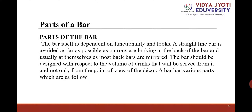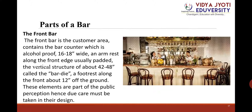Parts of a bar: The bar itself is dependent on functionality and looks. A straight line bar is avoided as far as possible, as patrons are looking at the back of the bar, usually mirrored. The bar should be designed with respect to the volume of drinks to be served. The front bar is the customer area containing the bar counter, which is alcohol-proof, 16 to 18 inches wide, with an armrest along the front edge, usually padded, and a vertical structure of about 42 to 48 inches called the bar die, plus a footrest about 12 inches from the ground.